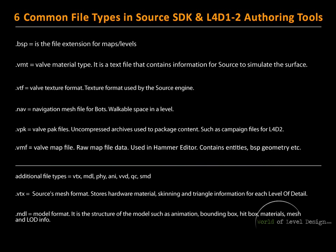Let's talk about the first one, which is BSP. BSP is the file extension for your maps and levels. This is the compiled map file. When you are working inside Hammer Editor and you compile the map file, a BSP map gets created. The BSP file is what the game recognizes, and that's what you will be playing when you launch the game and load your compiled map.